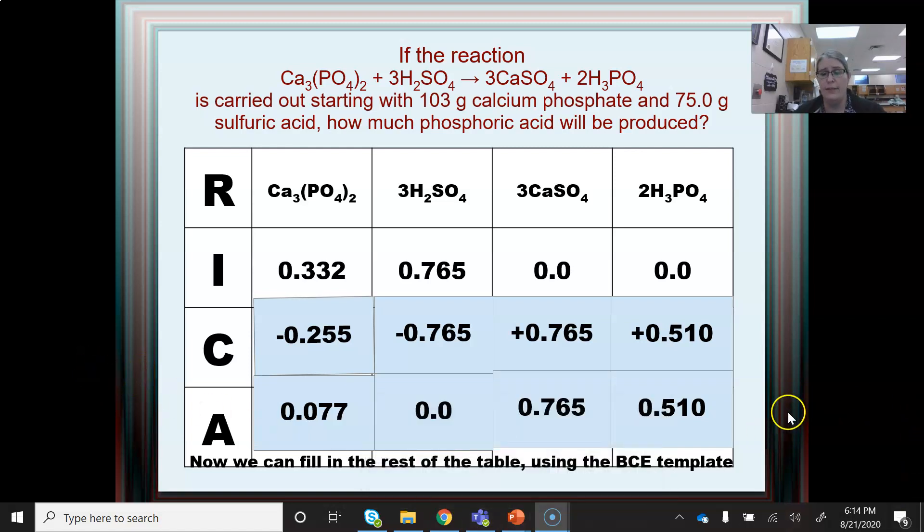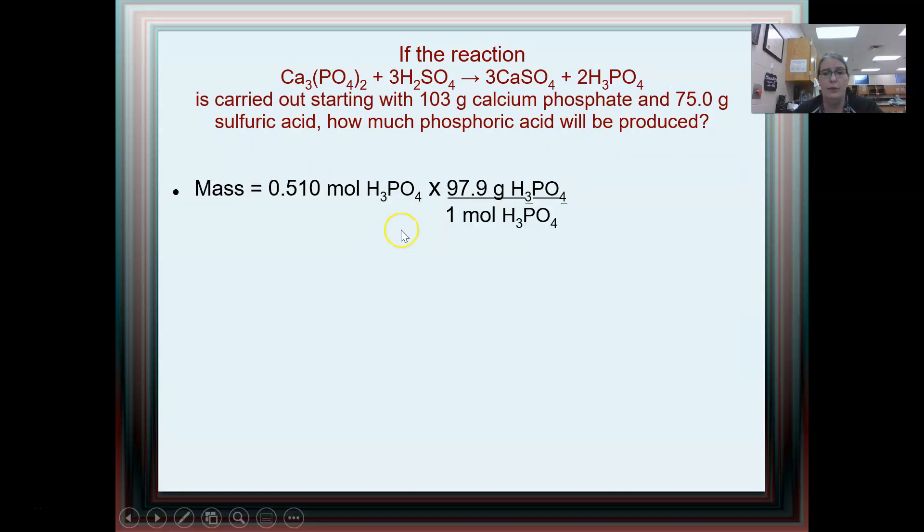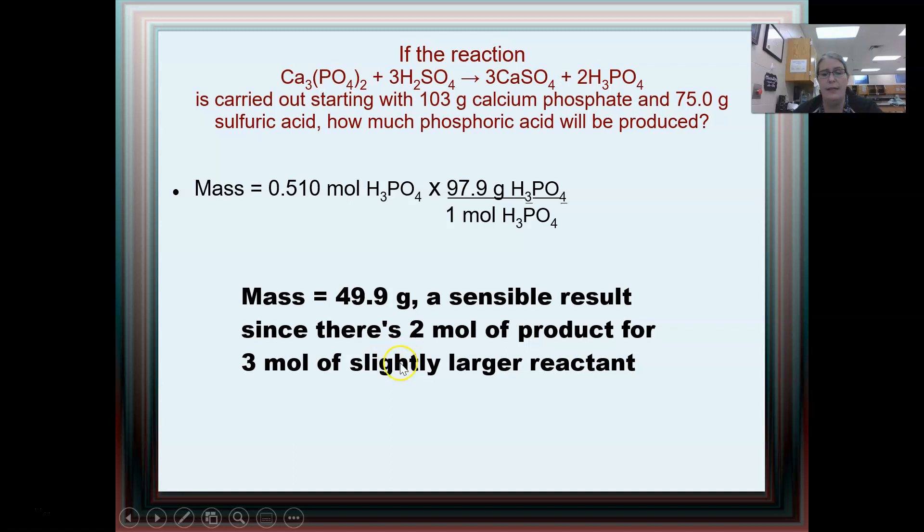The nice thing about RECA tables is that they give me all of the possible information in one table. I can find out about the phosphoric acid. I can find out about calcium sulfate. If they want to know how much of the excess is left over, all of those moles are in the after. So I would just convert them back to grams. So I know that I'm going to make 0.510 moles. I can find the molar mass of phosphoric acid. Moles on the top, cancel the moles on the bottom. And now I have the answer. And that's a reasonable, sensible result because sulfuric acid is about 98, phosphoric acid is pretty close to 98. So that's about two thirds of 98.